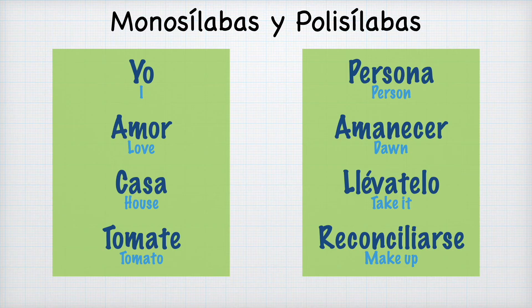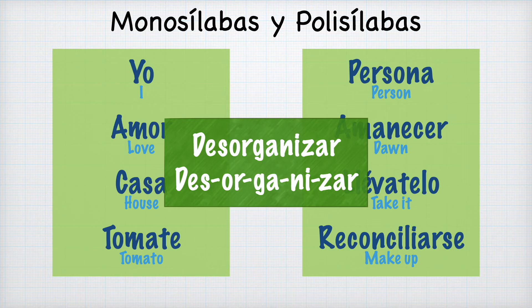Generally speaking, a syllable can be a vowel, a consonant and a vowel, or two consonants and a vowel. A consonant can't be a syllable on its own. After the first syllable, all other syllables start with a consonant, unless there's a prefix — such as in desorganizar, where the first syllable is des and then the next syllable is or, because that's how the base word starts.